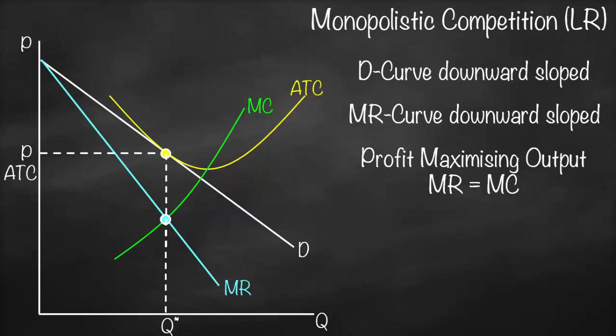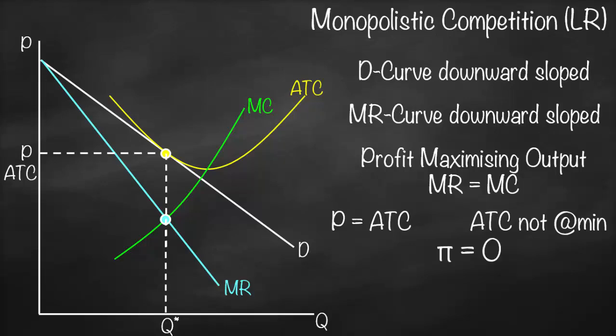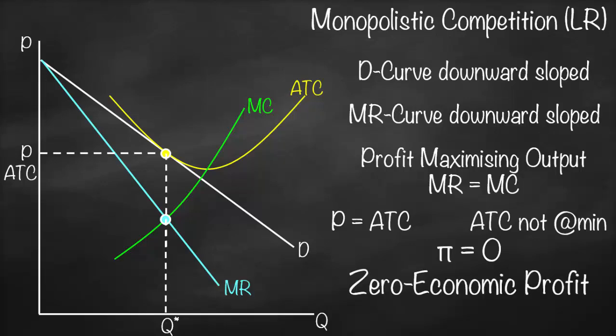At this quantity, the price and average total cost are tangent, therefore price equals average total cost. As you can see, our average total cost is not at its minimum at this point, because marginal cost does not equal average total cost here. Since price equals average total cost, we know that our profit is equal to zero — therefore we call it zero economic profit, or normal profit.